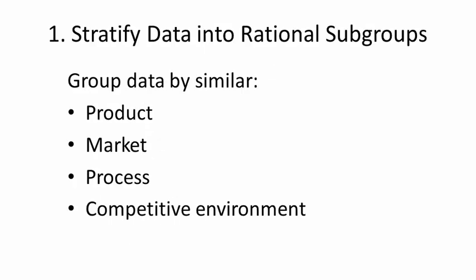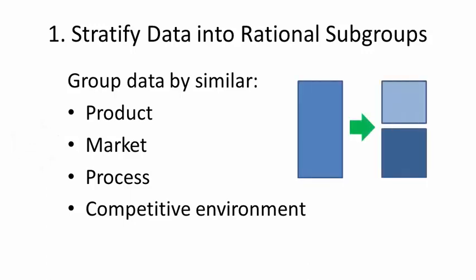The first step is to separate your data into homogeneous groups. For example, you may serve two completely different markets, enterprise and small businesses. Churn rates will likely be different, so separate your data into logical categories and chart them separately.